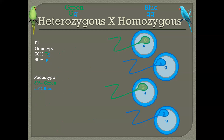This is the case when you have a heterozygous individual crossed with a homozygous recessive individual. If you had a heterozygous individual crossed with a homozygous dominant individual — a green bird which was capital G, capital G — you'd get a 50% ratio of capital G, small g, and 50% of capital G, capital G. But the phenotype — all of those birds, 100% — would have been green.